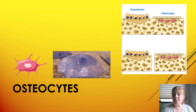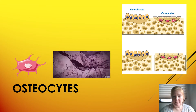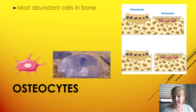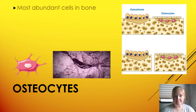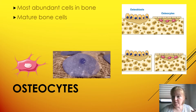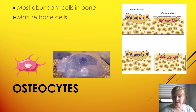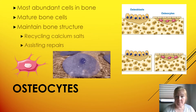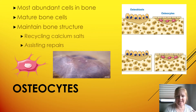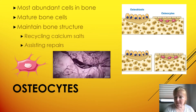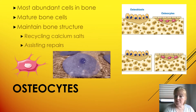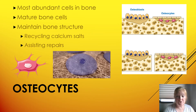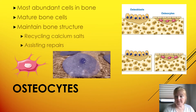First up is osteocytes. Osteocytes are the most abundant cells in bone. They're mature bone cells. They maintain the structure of the bone, they recycle calcium salts, and they assist with repairs. Later when we do the structure of an osteon, you'll see where the osteocytes are — but they're the mature bone cells, most abundant.